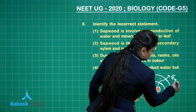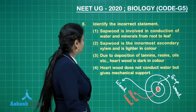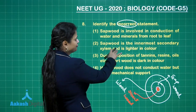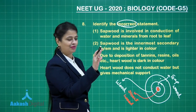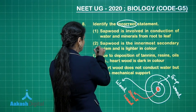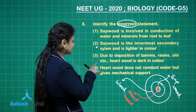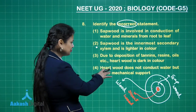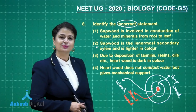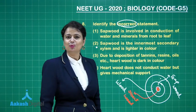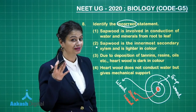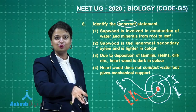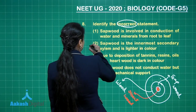Looking at the options: sapwood is involved in conduction of water and minerals from root to leaf — that's quite right. But 'sapwood is the innermost secondary xylem' — no, it is not innermost, it is outermost. So this is wrong. Due to deposition of tannins, resins, oils, etc., heartwood is dark in color — that's perfectly right. Heartwood does not conduct water but it is not useless; it provides mechanical support and resistance to termite attacks. So heartwood is very costly and preferred for furniture. The incorrect statement is option number two.